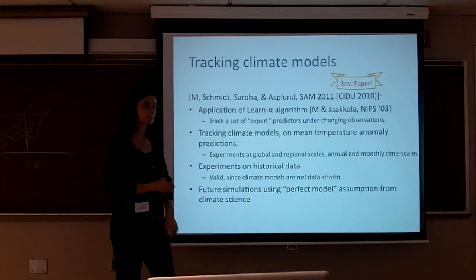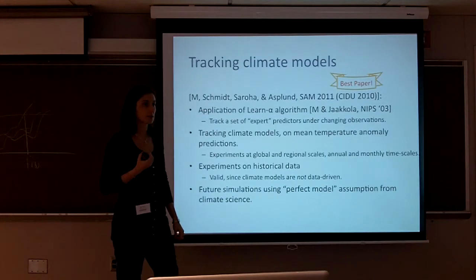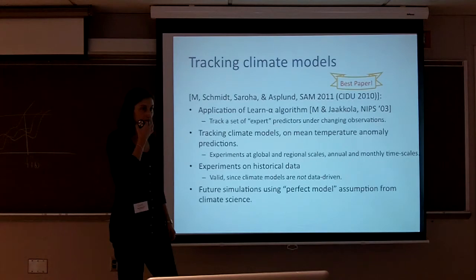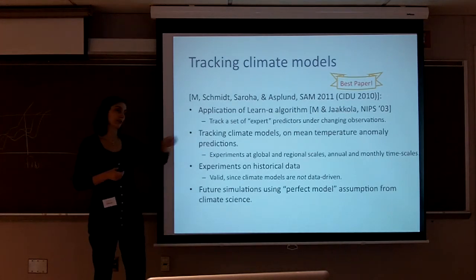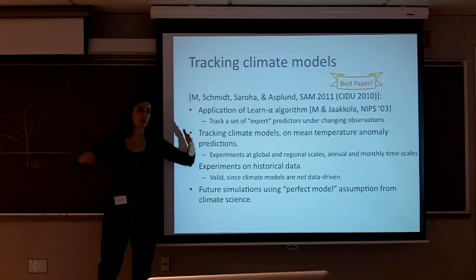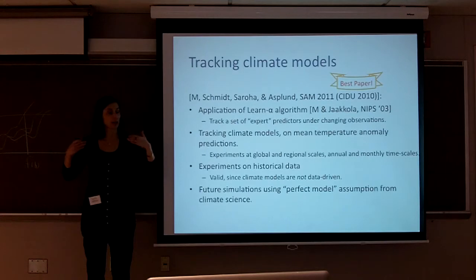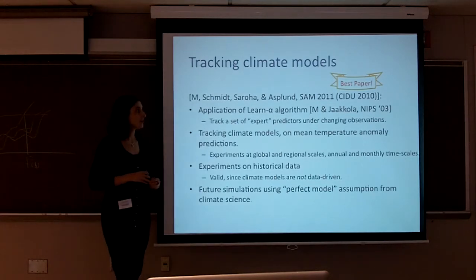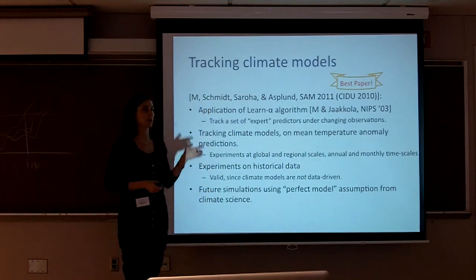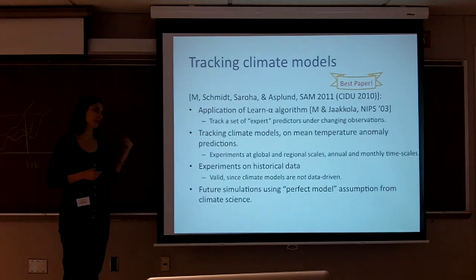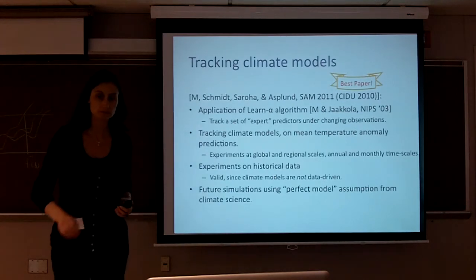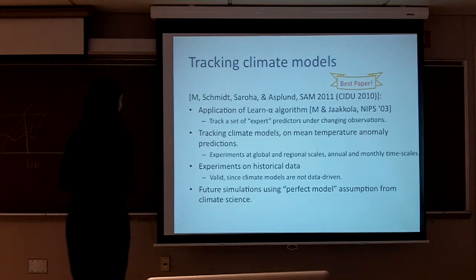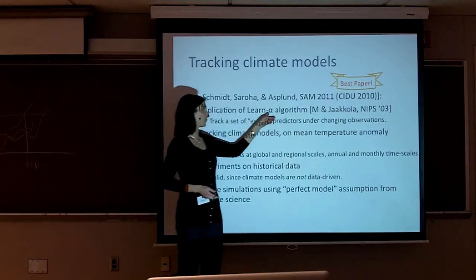An audience member asks whether there's a chance to change input parameters for the climate models to see how stable the prediction is as a function of parameter changes. The reply: the multiple runs were just different random instantiations and we only used one run per model. Within the dataset that has all IPCC models, the input conditions are the same — it's not about varying parameters. But from the machine learning perspective, the algorithm I'm about to present can definitely be used in that setting; it's completely flexible, because you can take into account the error and change in predictions as parameters vary.